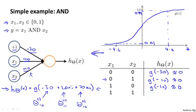This is also g of minus 10. That is, if x1 is equal to 1 and x2 is 0, this is minus 30 plus 20, which is minus 10. And finally, if x1 equals 1, x2 equals 1, then you have g of minus 30 plus 20 plus 20. So that's g of positive 10, which is therefore very close to 1.